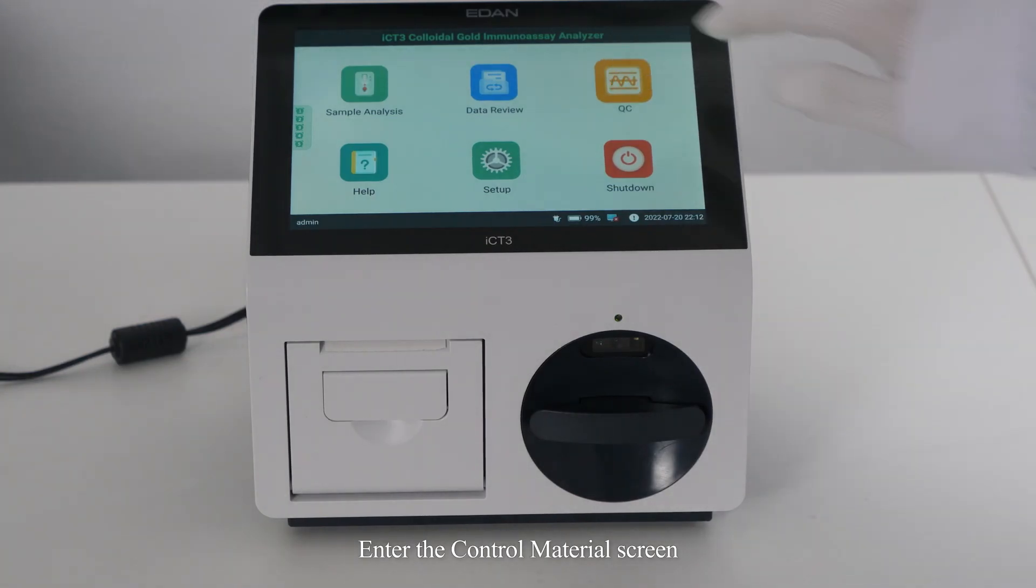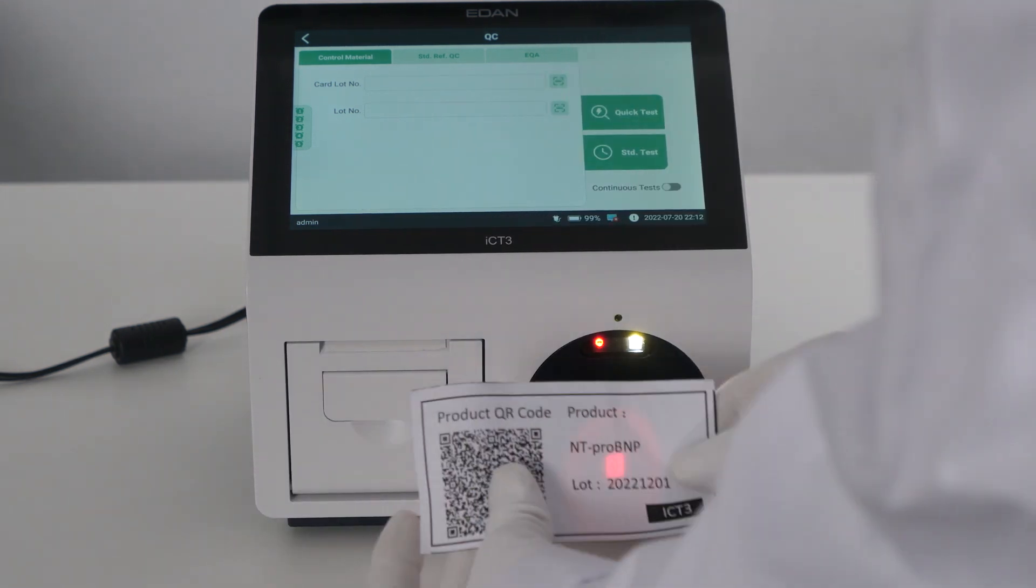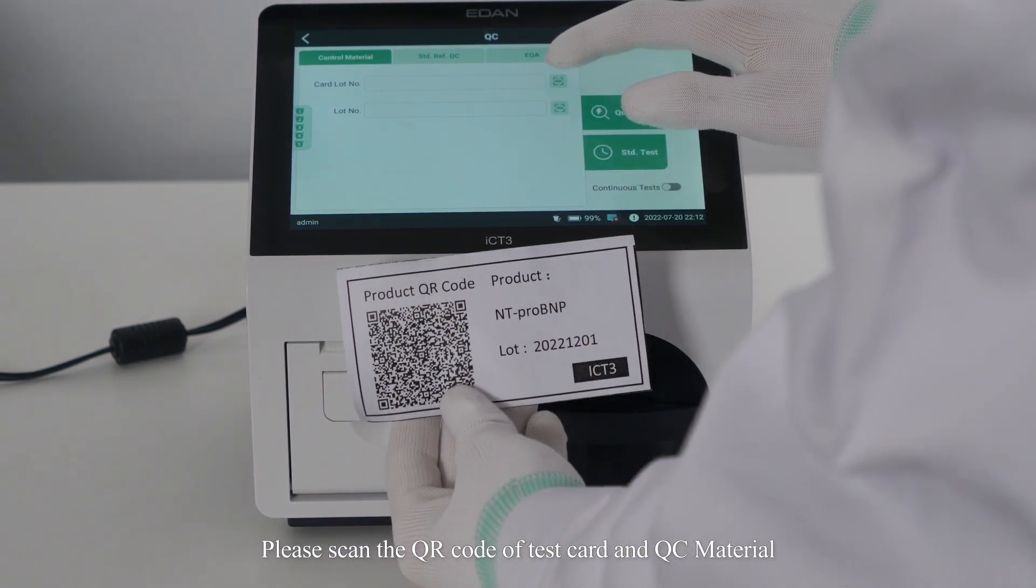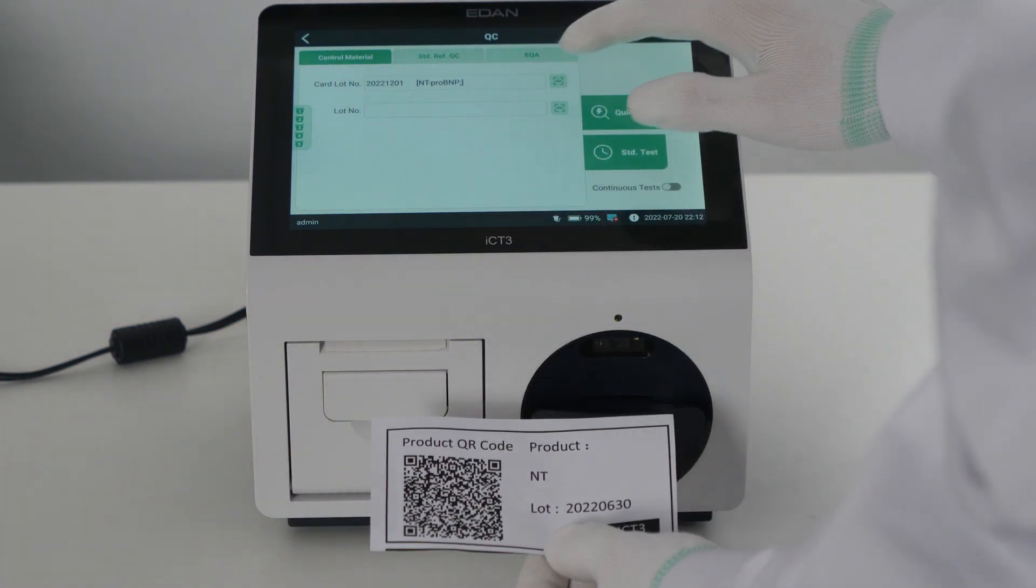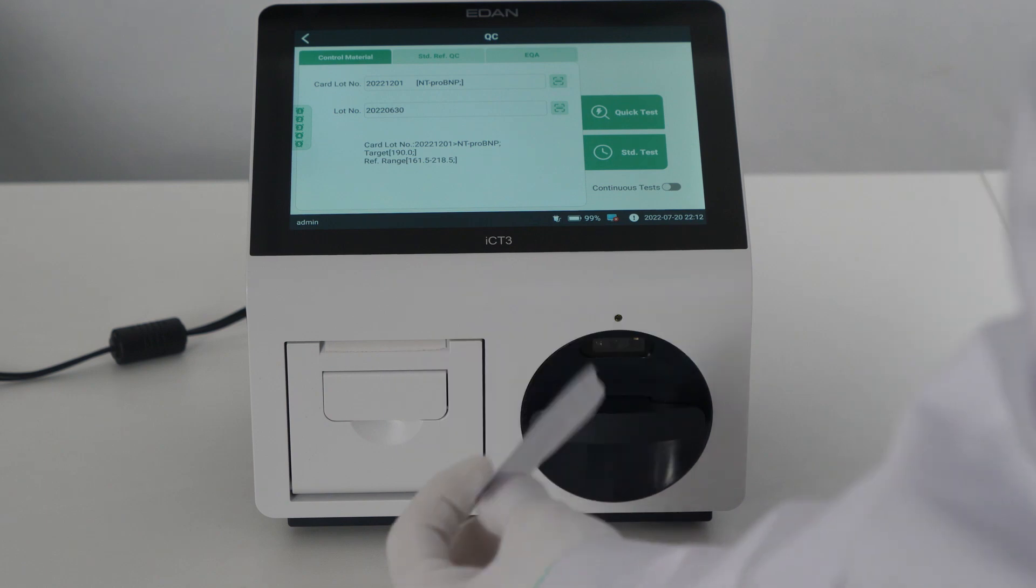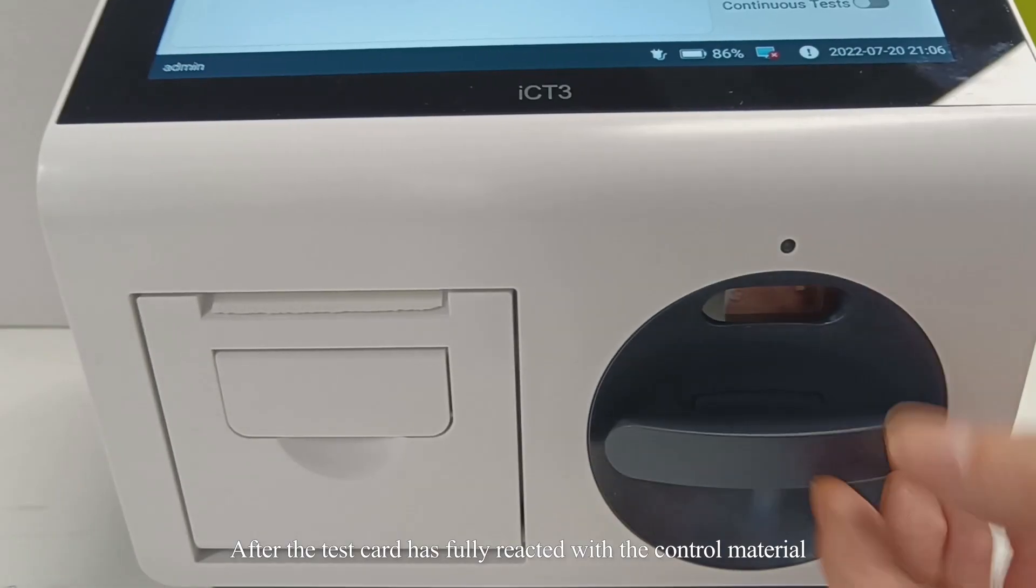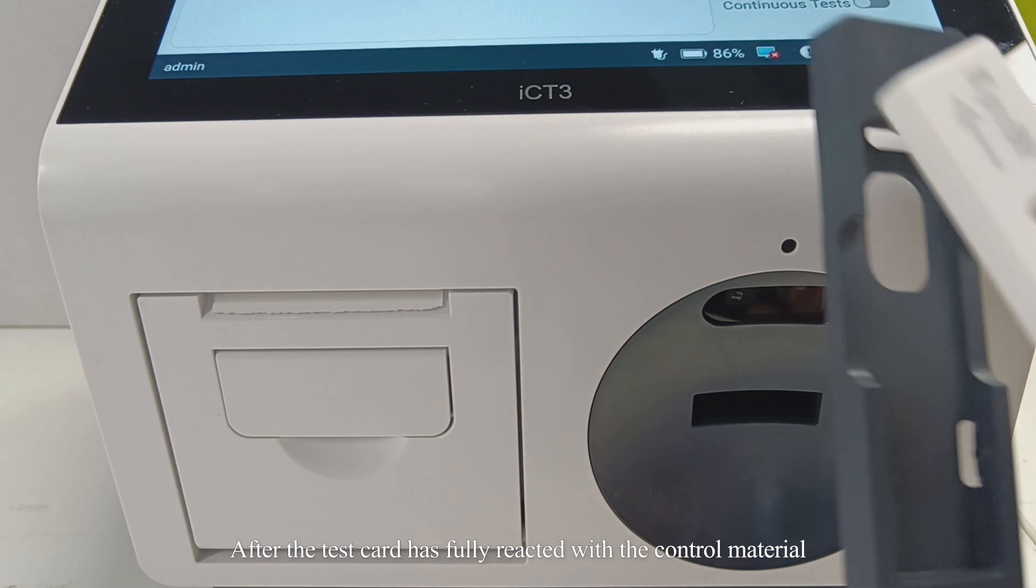Enter the control material screen. Please scan the QR code of test card and quality control material. After the test card has fully reacted with the control material.